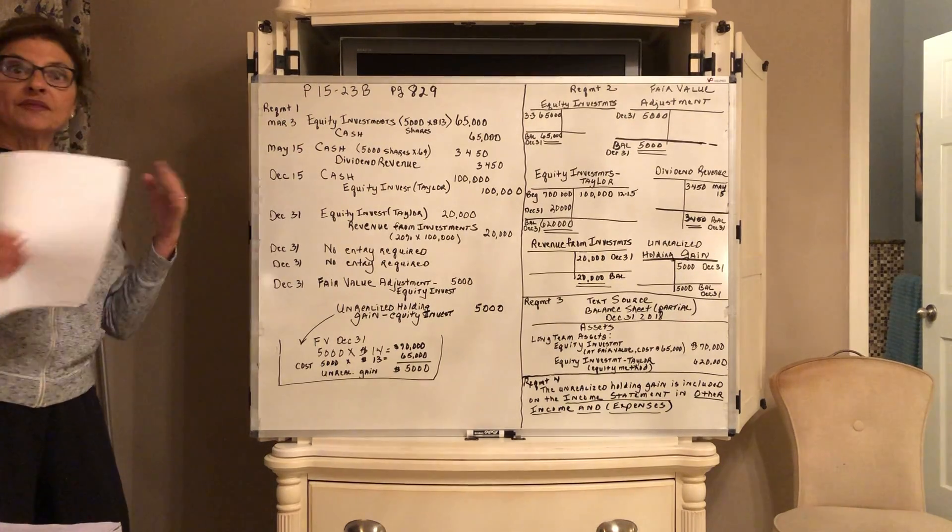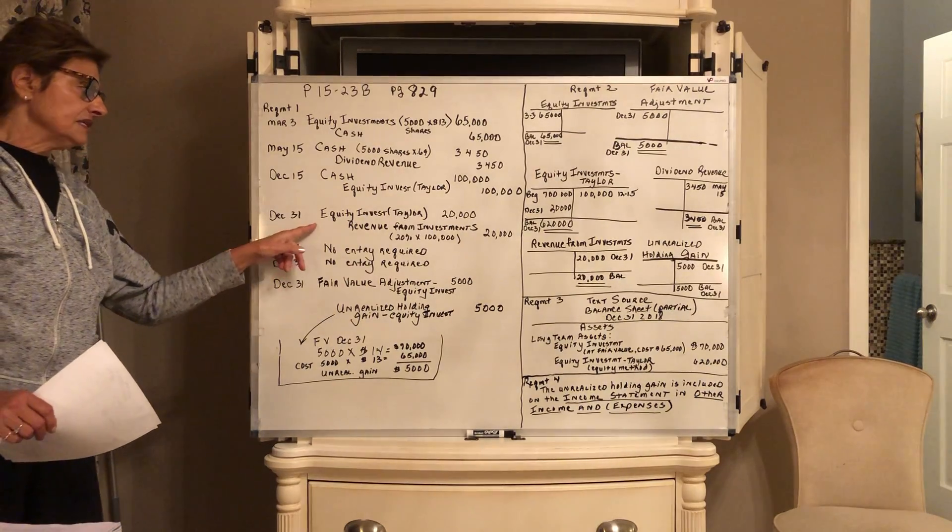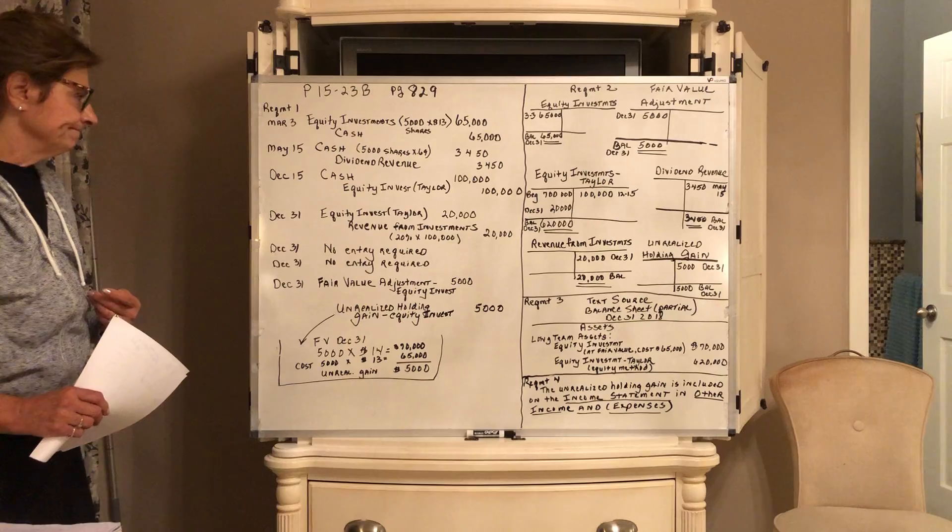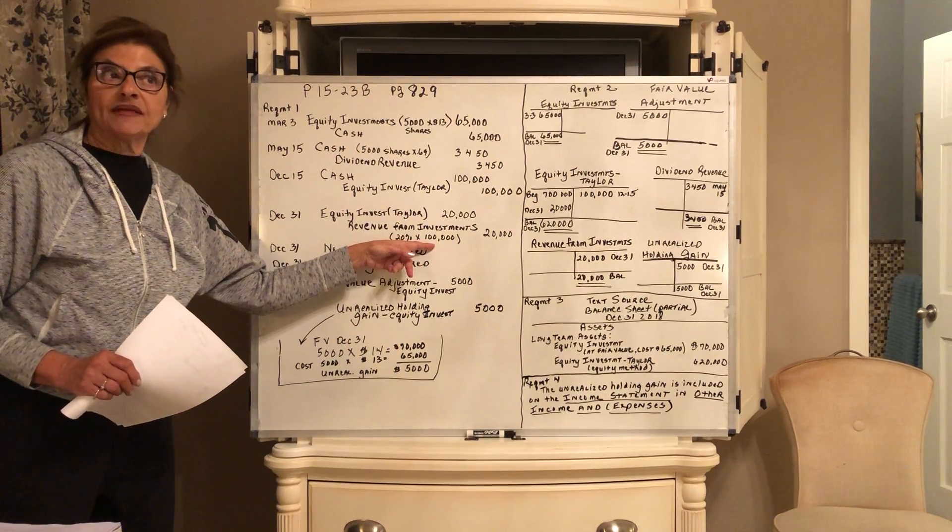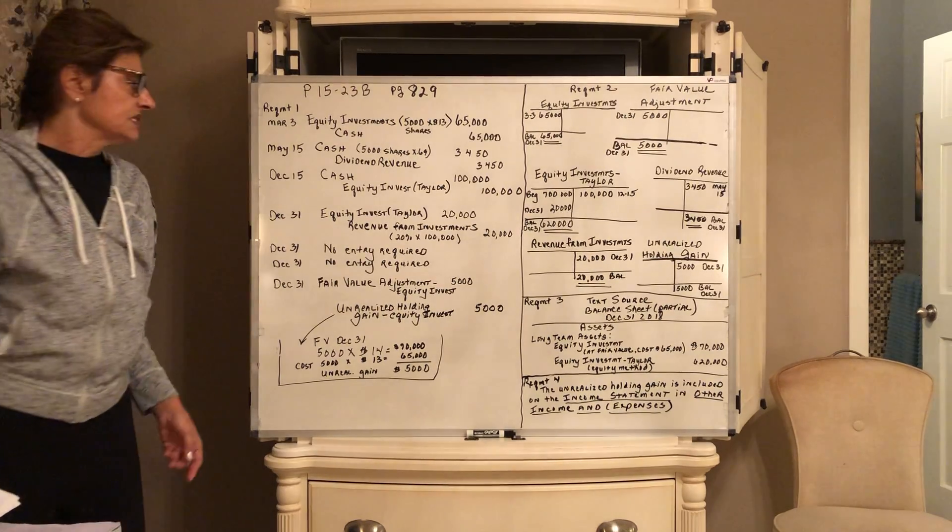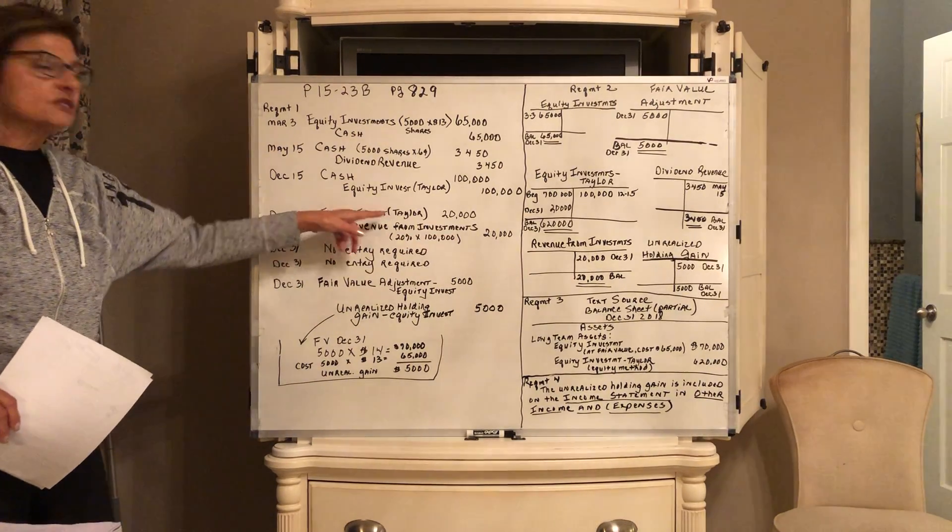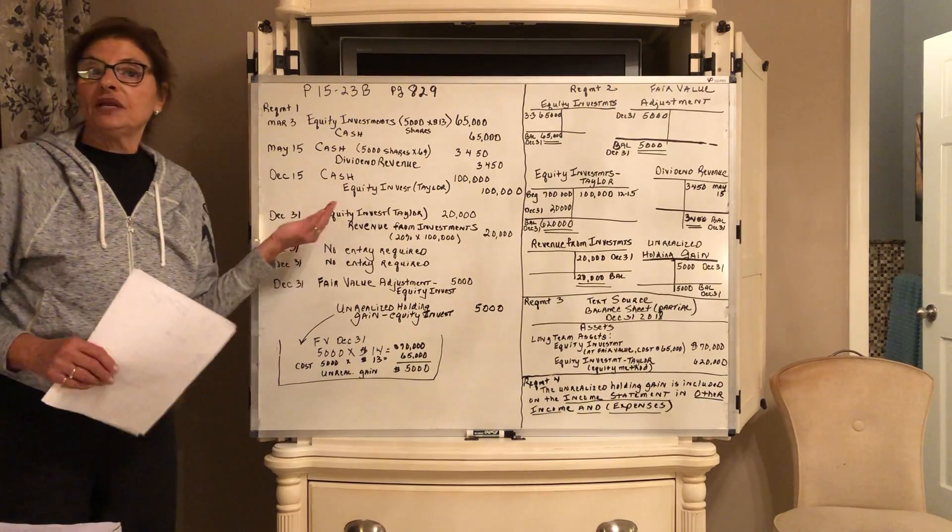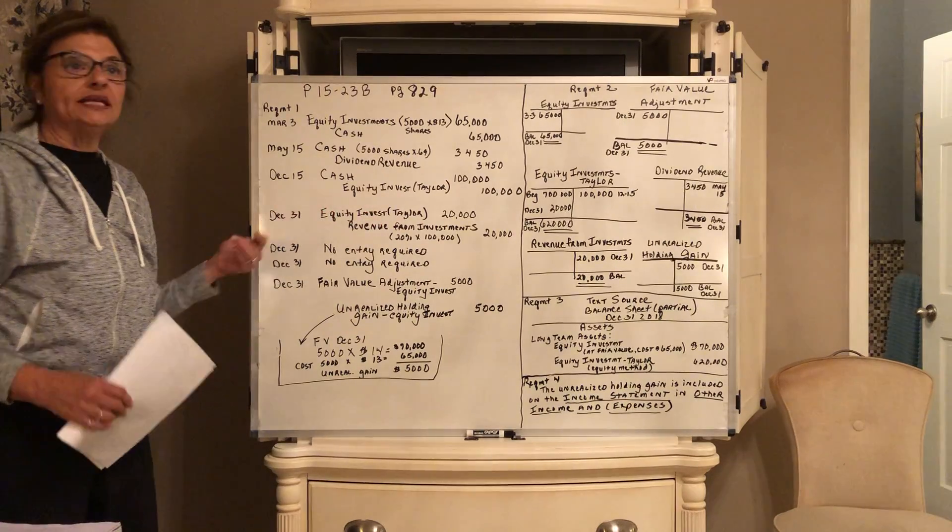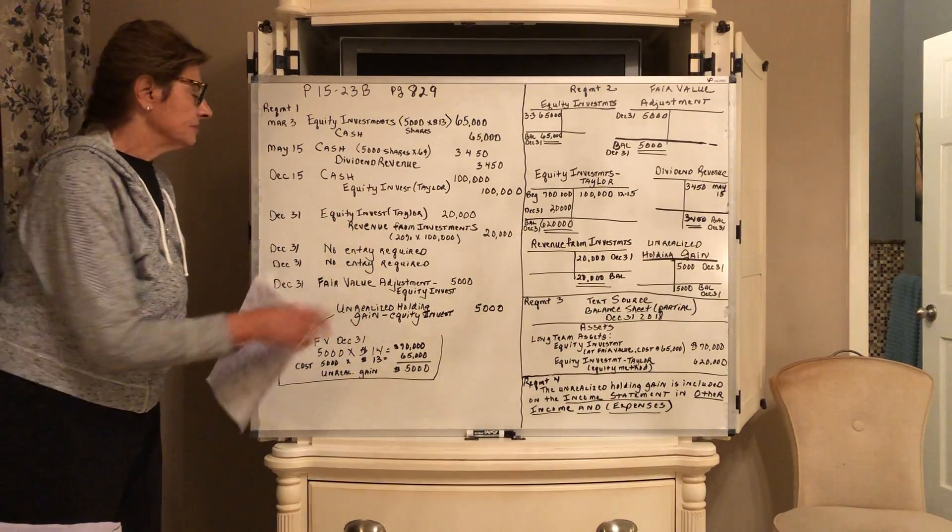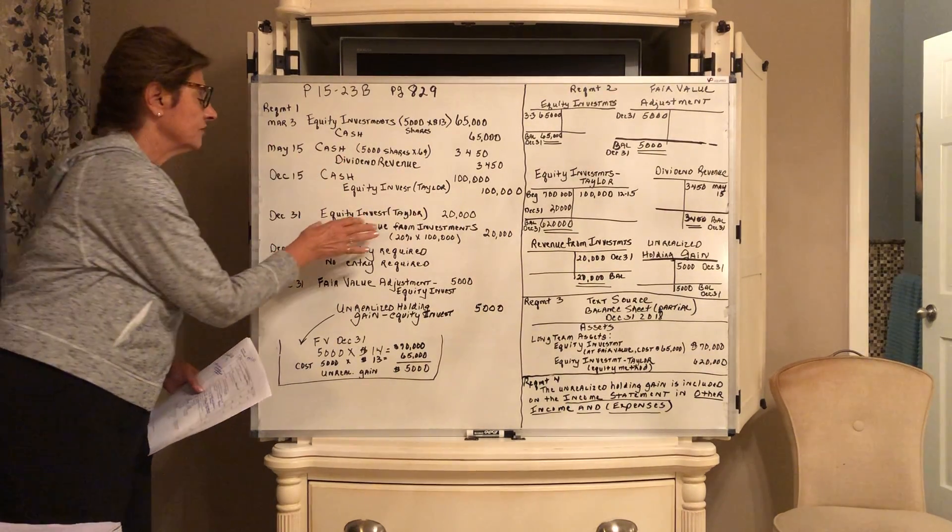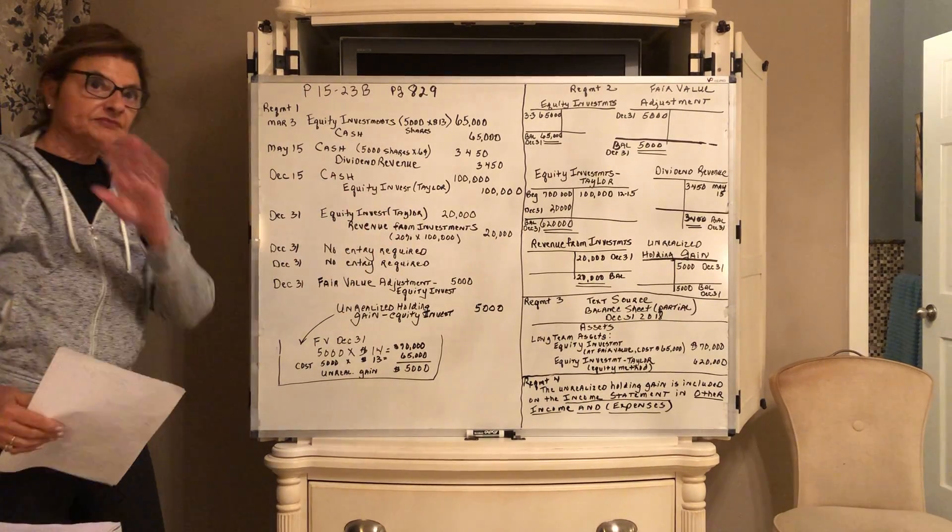At the end of the year, on December 31st, we get 20% of their net income. Their net income was $100,000. We get 20% of the $100,000 net income, so we got $20,000 of that. So equity investment now gets debited or goes up. Remember, the equity investments as well as the debt investments are asset accounts, so they increase on the debit side. So they decrease on the credit side. Sorry, I messed that up royally.